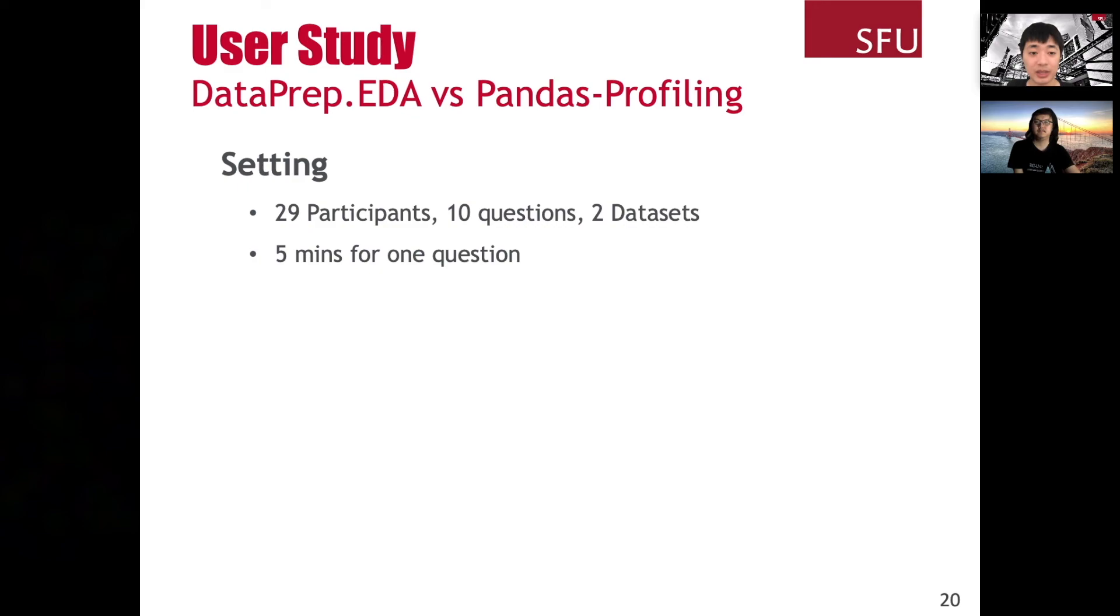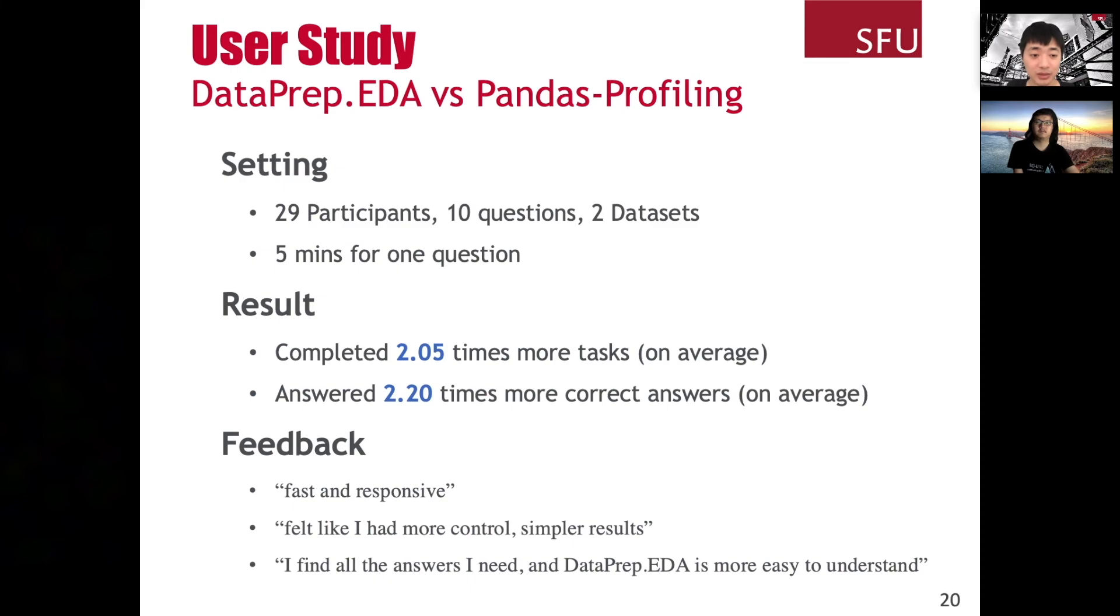Besides the performance, we did a user study to do end-to-end testing as well. We recruited 29 participants, containing undergrads and postgraduate students. We designed 5 questions for 2 datasets each. Each participant could spend at most 5 minutes to answer these questions. We got very positive results. On average, the participants completed 2.05 times more tasks and answered 2.2 times more correct answers, comparing to Pandas Profiling. Some feedbacks include fast and responsive, more control, and easy to understand.